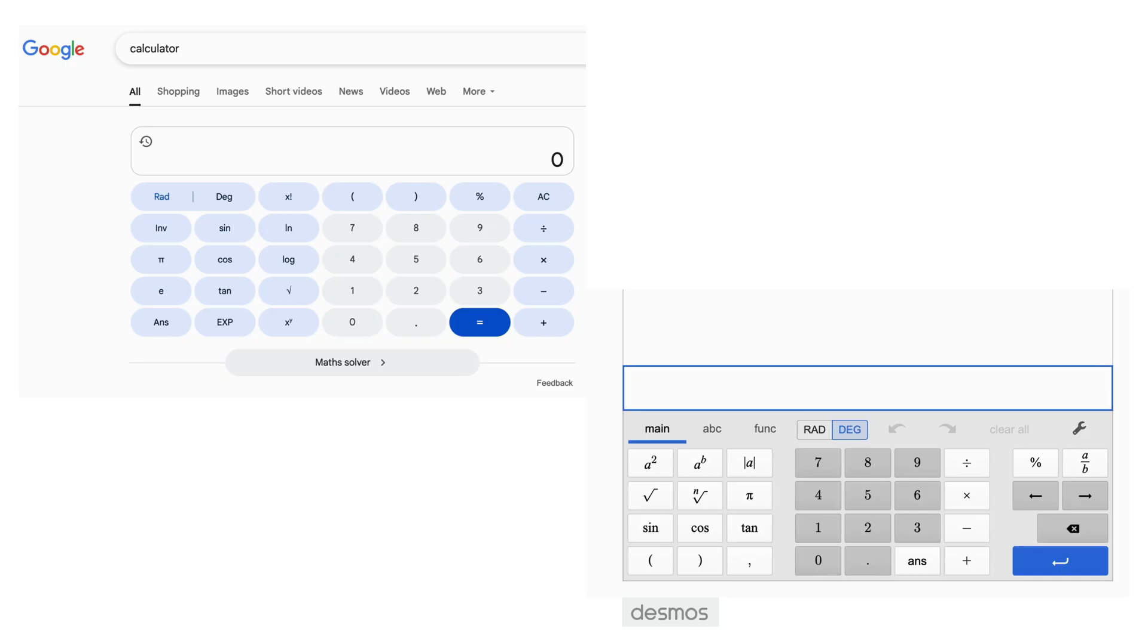Now, when you open a calculator designed by engineers from Google, or the calculator made by Desmos, which is trusted by millions of students and teachers, and put the value zero raised to zero in it, it says the answer is one and not undefined.